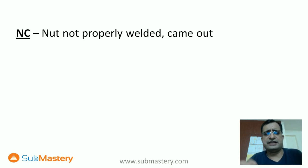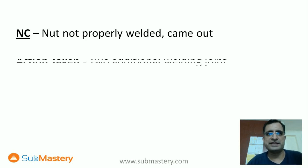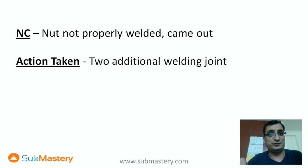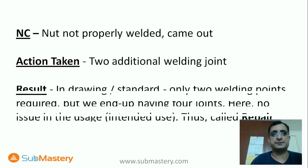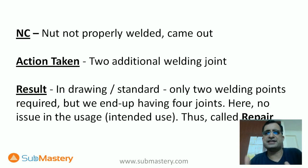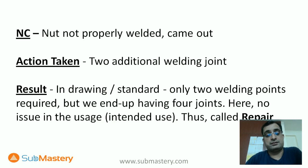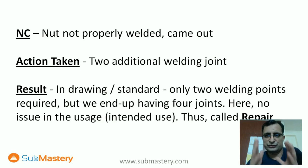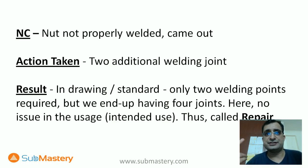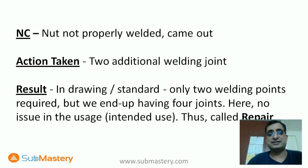Let's look at an example of repair. Say a nut was not properly welded and it came out. The operator did two additional welding joints — there were already some joints and they added two more so it wouldn't come out again. In the drawing and standard, the requirement was for only two welding points, but we ended up with four joints. The function is fine, but it is not as per the drawing or standard. This is a classic example of repair, where something additional was done beyond the standard requirement.